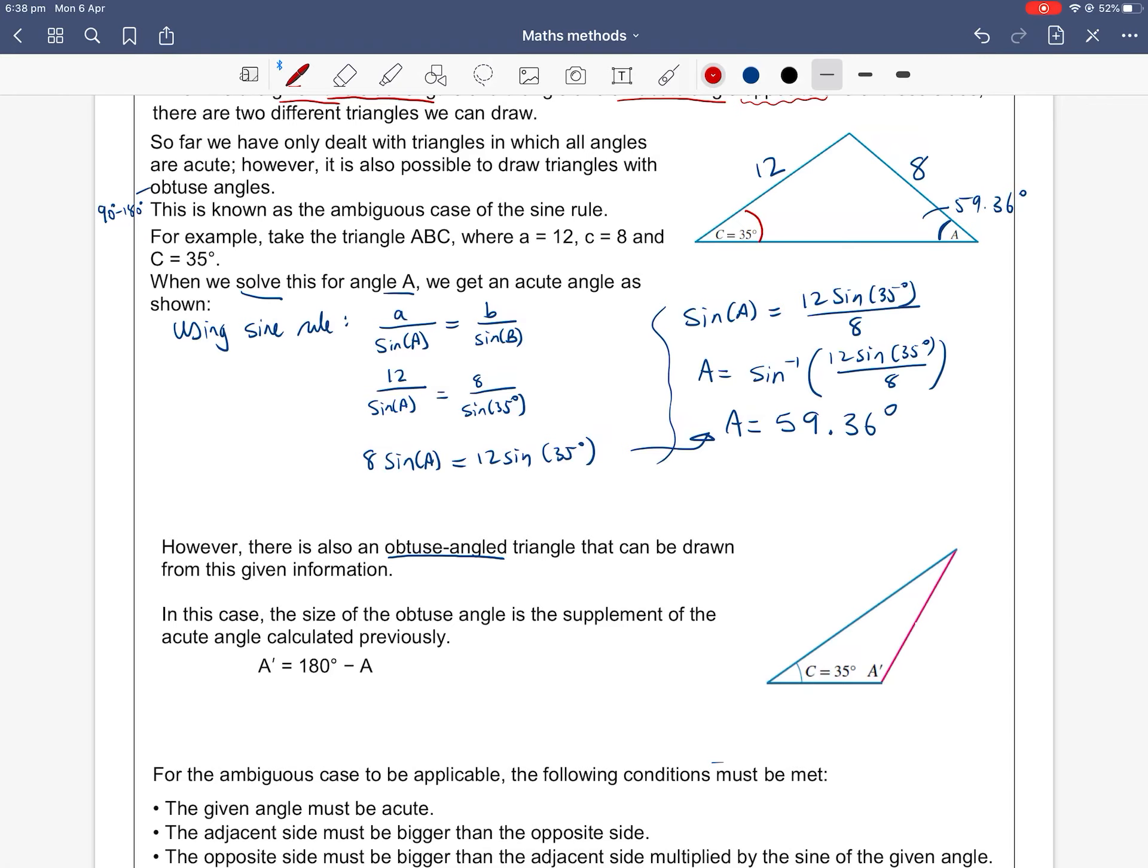Namely, if I'm given angle C is 35 degrees and we know the side length of 12 and we know that the opposite side length is 8, technically, if I wanted to, I could also construct this triangle where this side length is 8. I also keep my side length of 12 and I keep my angle 35 degrees, but this new angle A prime is not acute anymore. It's not less than 90 degrees, it's more than 90 degrees. And in fact, this obtuse angle can be calculated by 180 degrees minus the angle we have calculated.